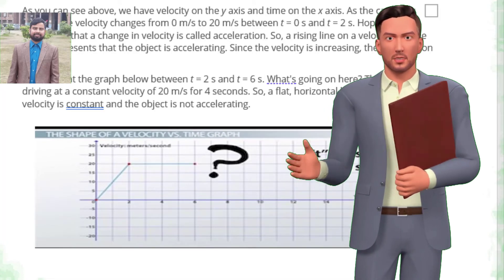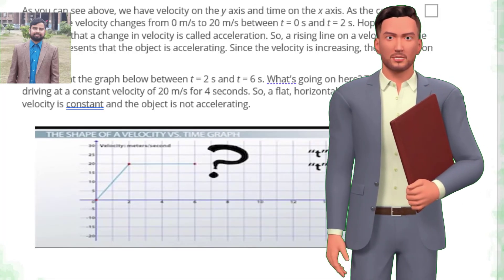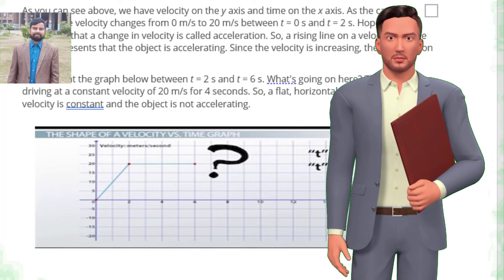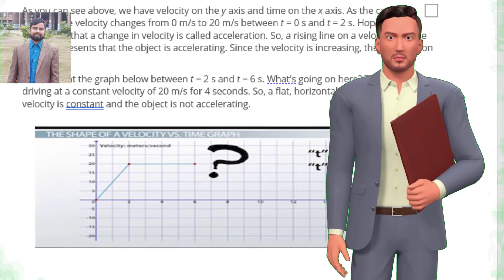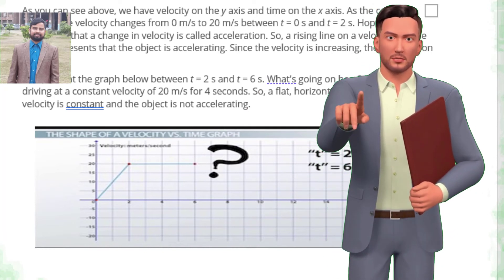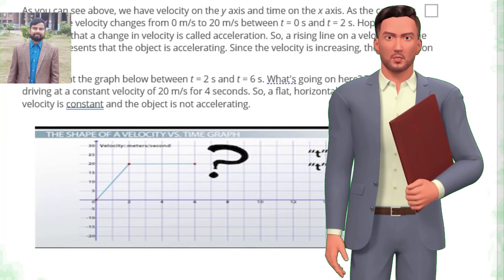Now, look at the graph below between t equals 2s and t equals 6s. What's going on here? The car is driving at a constant velocity of 20 meters per second for 4 seconds. So, a flat horizontal line means that the velocity is constant and the object is not accelerating.